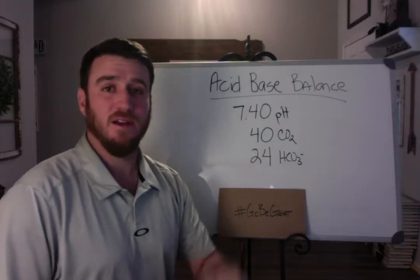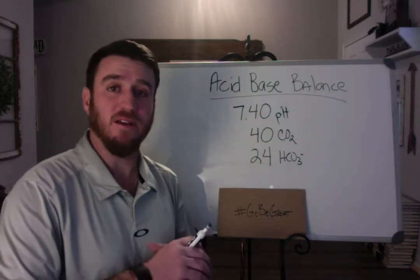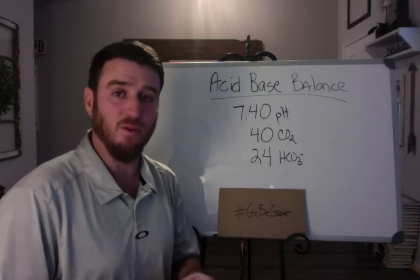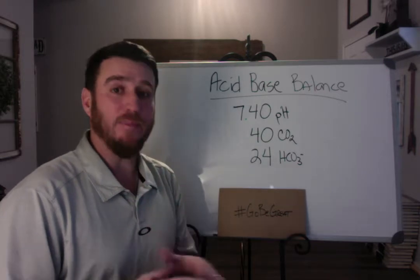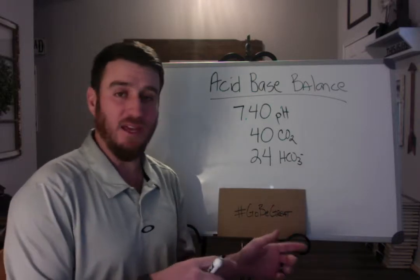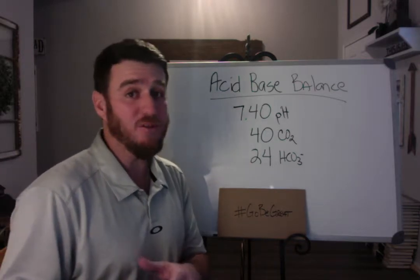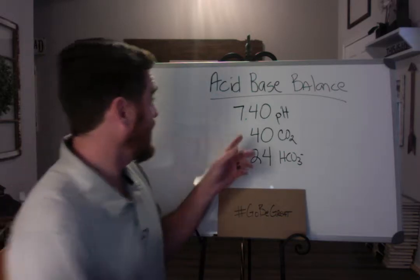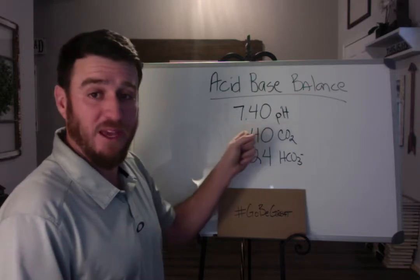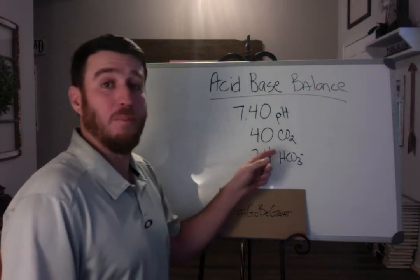Hey future respiratory therapists, I have a lesson here on acid-base balance — very simplistic, basic acid-base balance interpretation. When we talk about ABG interpretation, you need to understand what effect CO2 has on pH and what bicarb's effect is on pH. But first, you need to understand what pH means. What I have on the board here is perfect harmony: 7.40 is our perfect pH, 40 is our perfect CO2, and 24 is our perfect bicarb.